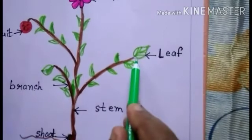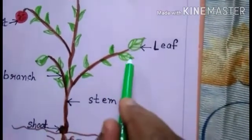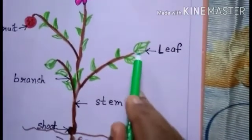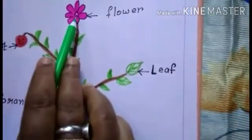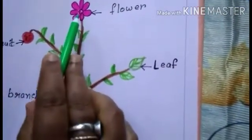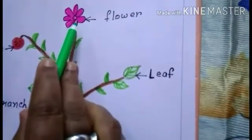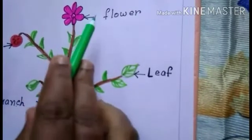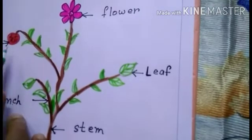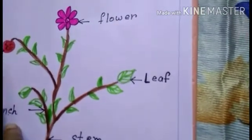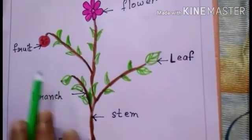Leaves prepare food for the plant. Flowers are the reproductive parts of the plant — reproductive means the upbringing of a plant. Fruits are the edible product of a plant which help in the upbringing of a new plant.